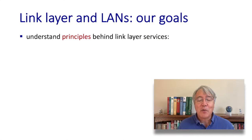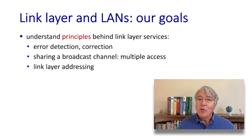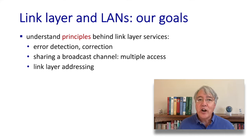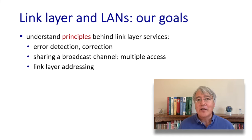Let's start off our study of the link layer by laying out our goals. As always, we're going to want to look at both principles and practice. In terms of principles, we've already studied error detection — we looked at the internet checksum earlier in the transport layer. In the link layer, we're going to study much more powerful error detection and correction techniques. The heart of the principles coming up next is the multiple access problem: how do multiple nodes share a common communication channel? This to me is another top-10 problem in networking. And of course, we want to look at the issue of addressing in the context of the link layer.